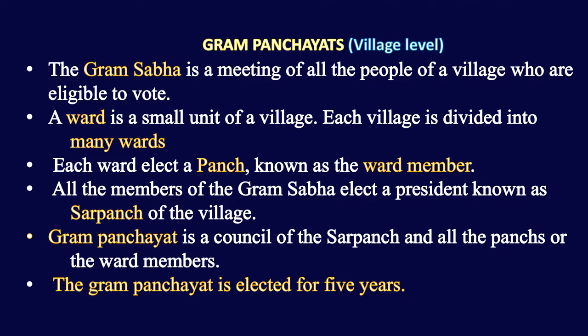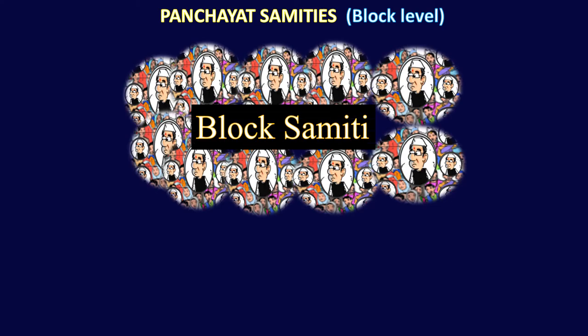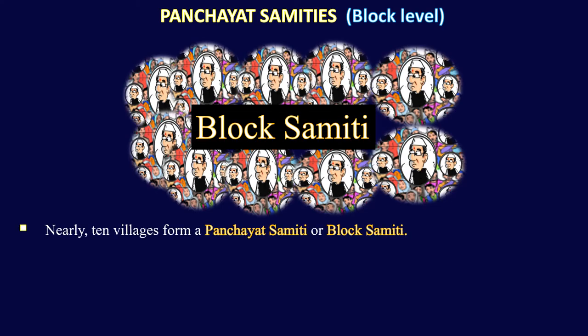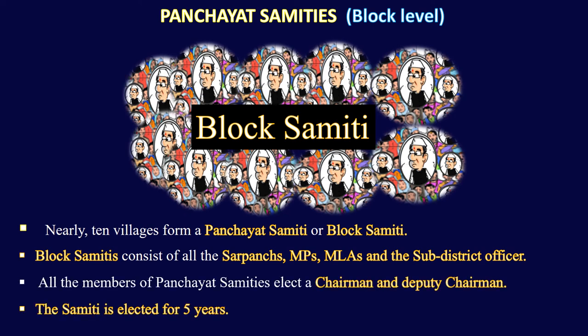The second level of panchayat is Block Samiti, also called Panchayat Samiti. Many Gram Panchayats together make a Block Samiti — there are nearly 10 village panchayats in one Block Samiti. The Block Samiti does not hold separate elections for its council seats. Instead, the Block Samiti consists of all the Sarpanchs of the Gram Panchayats, the MPs and MLAs, and the sub-district officer of that area. All members of the Panchayat Samiti elect a chairman and deputy chairman, and the Samiti serves for five years.